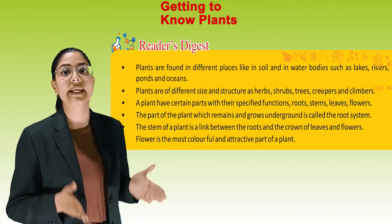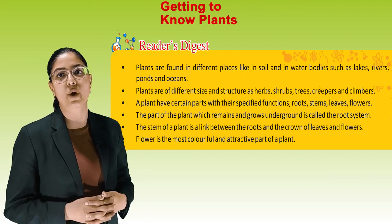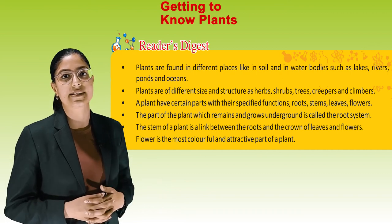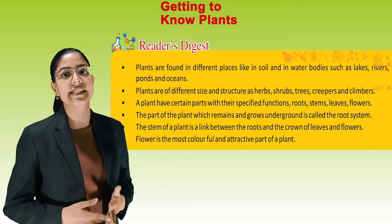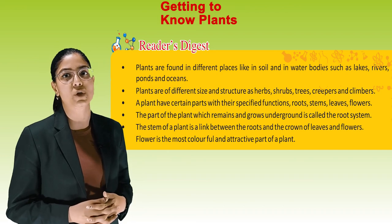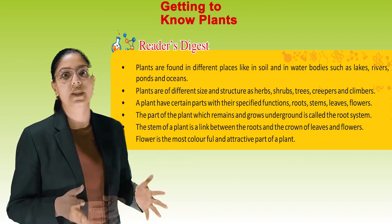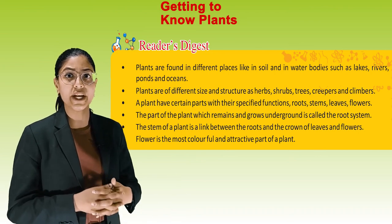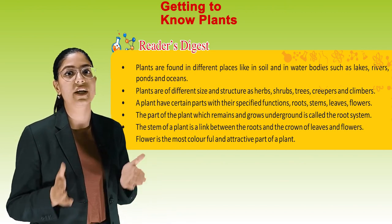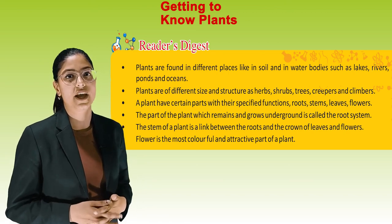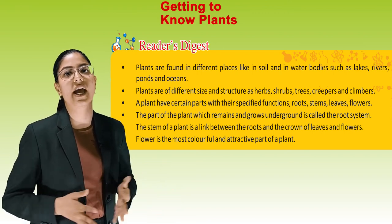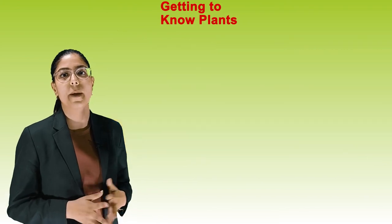Quick Revision: Plants are found in different places like in soil and in water bodies such as lakes, rivers, ponds and oceans. Plants are of different sizes and structures — herbs, shrubs, trees, creepers and climbers. Plants have certain parts with specified functions: roots, stems, leaves and flowers. The root system grows underground; the stem links roots to leaves and flowers; flowers are the most colorful and attractive part of a plant. Okay students, we have done our chapter. Now it's time to take your leave. Bye-bye, thank you.